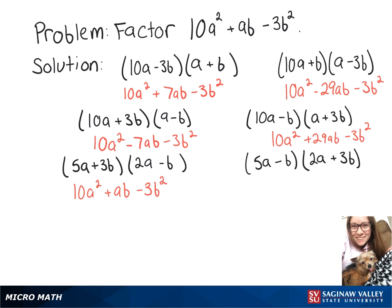So we can rewrite 10a squared plus ab minus 3b squared is equal to 5a plus 3b times 2a minus b.